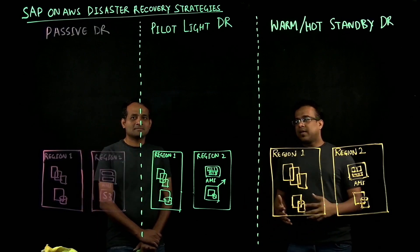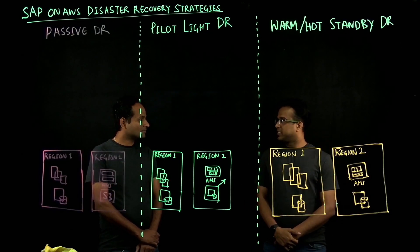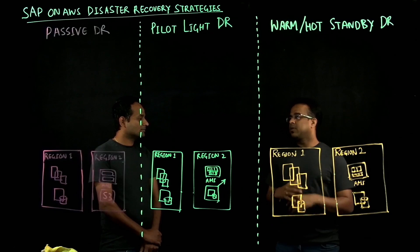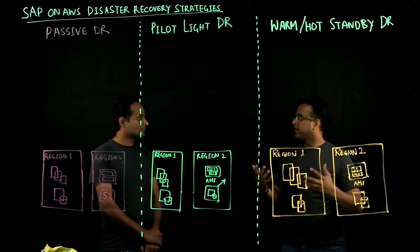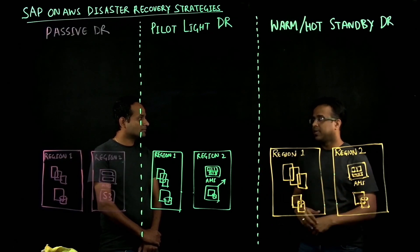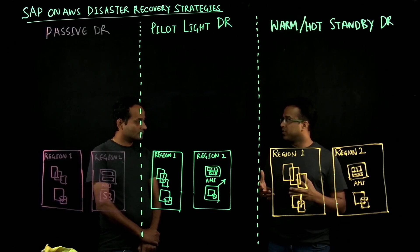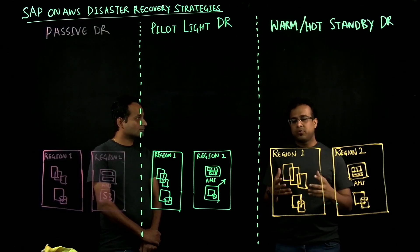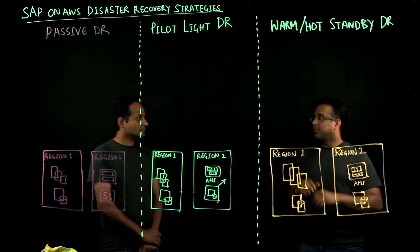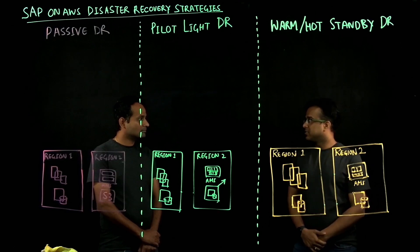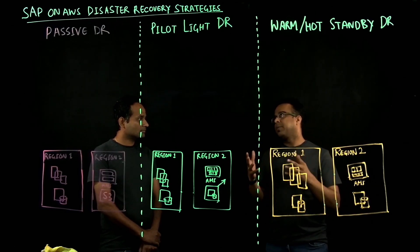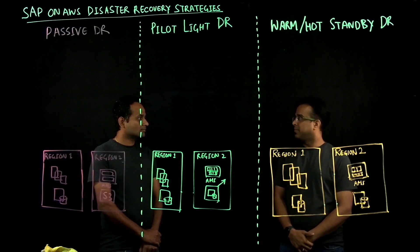As customers embark on their journey for SAP on AWS, they are needing that disaster recovery pattern and different scenarios they can adopt. SAP is a critical workload for them and they want to understand different disaster recovery strategies and patterns. Srinath, can you help us illustrating different disaster recovery patterns?